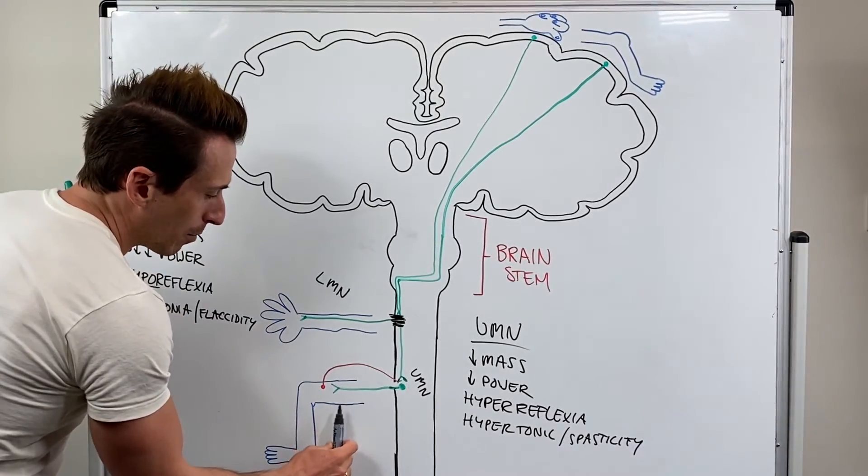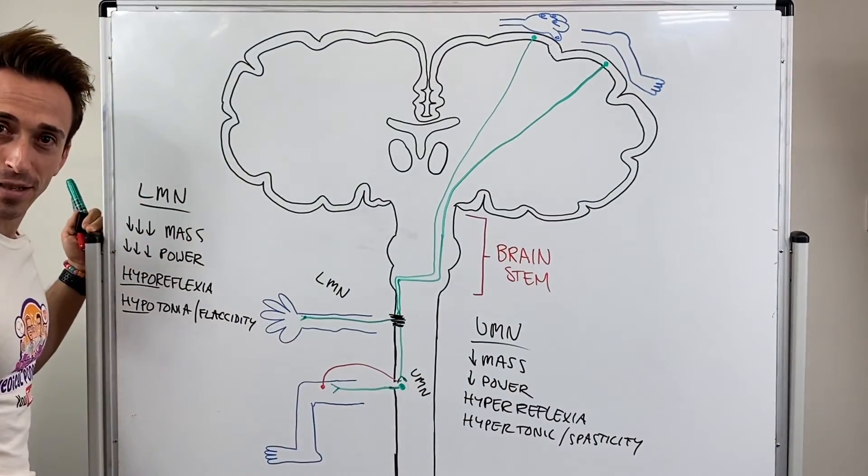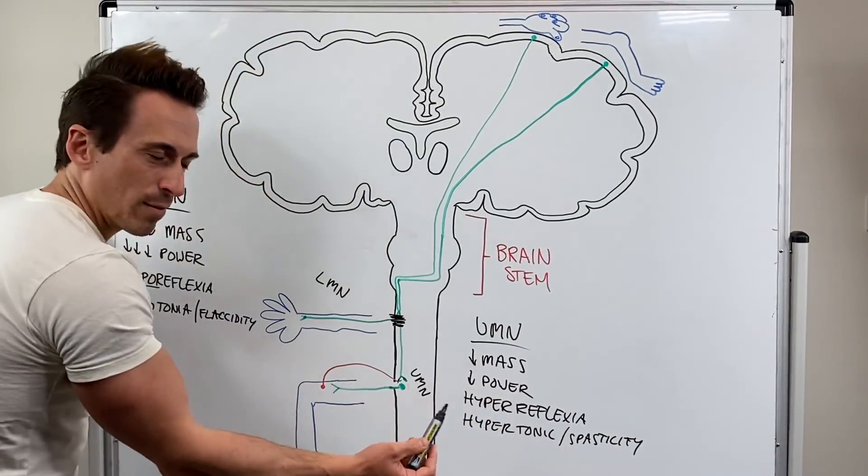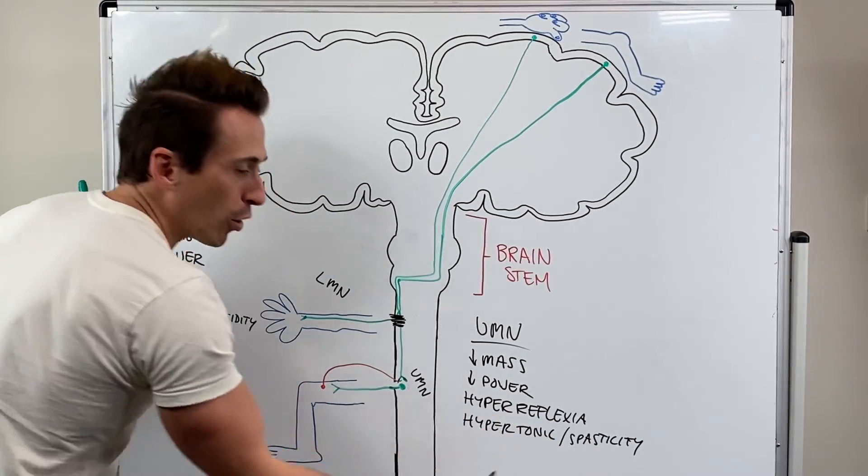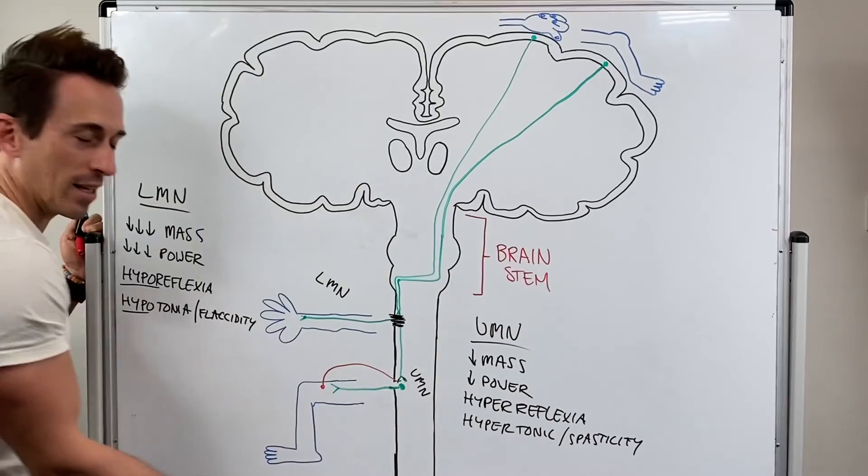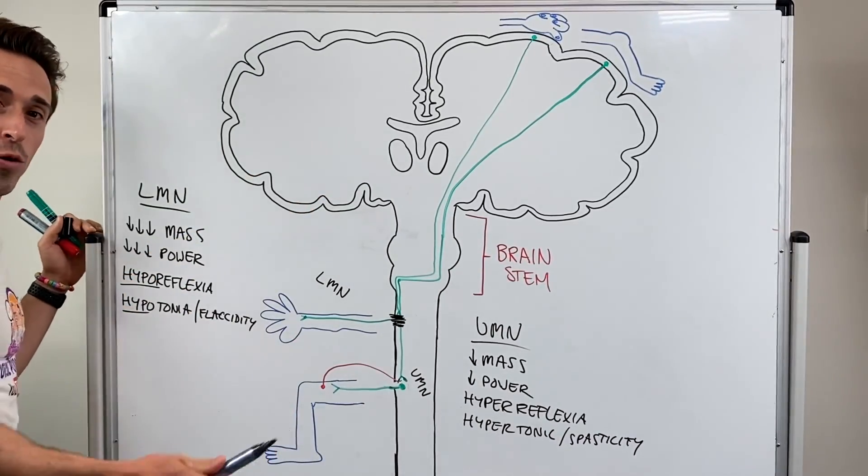But for the leg, it's the upper motor neuron that's affected. And so what you get is less loss of mass, less loss of power, hyperreflexia, and hypertonicity and spasticity of that leg. So this is upper versus lower motor neuron injury. Thank you.